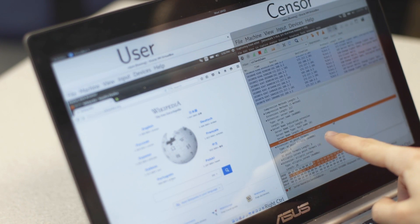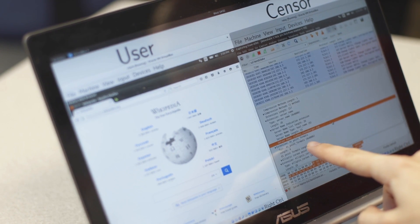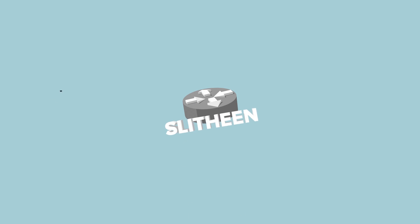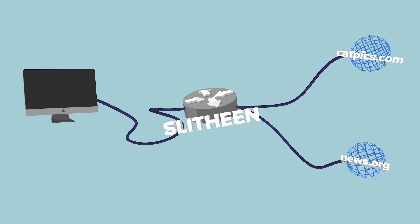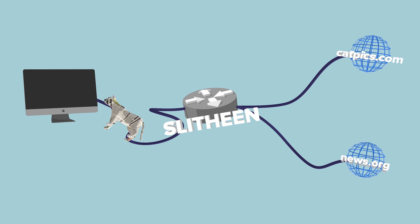At the University of Waterloo, we are building systems that thwart Internet censorship. We disguise traffic so that it can slip through a country's filters and firewalls. We have recently developed a system called Slothin that takes traffic from an uncensored, overt web page and replaces the images and videos with censored content.